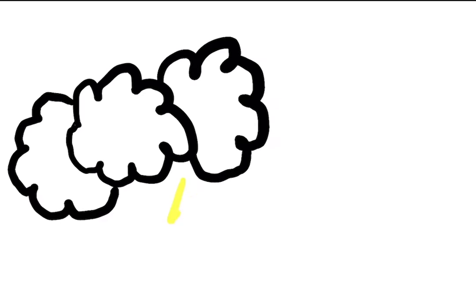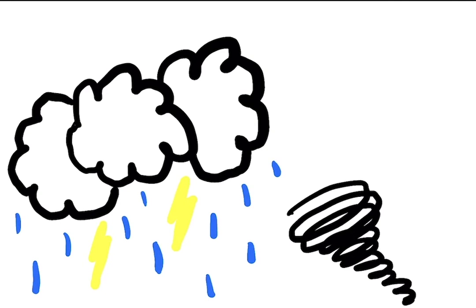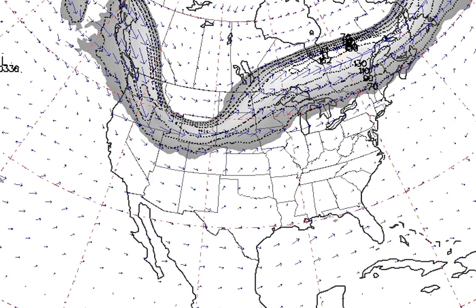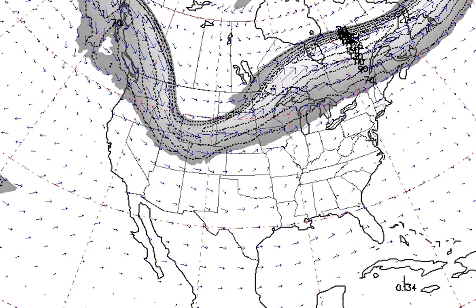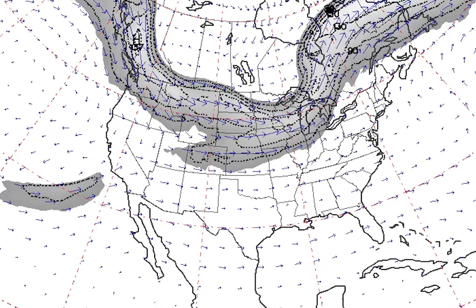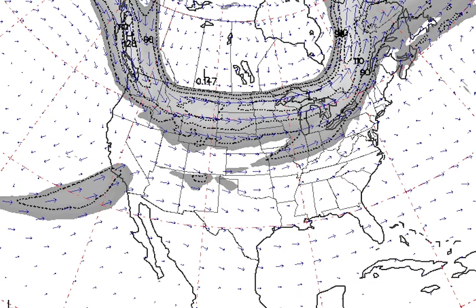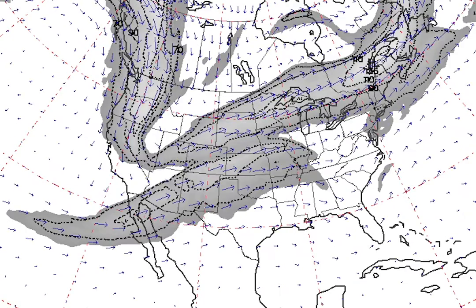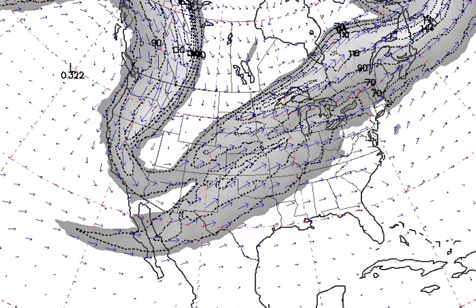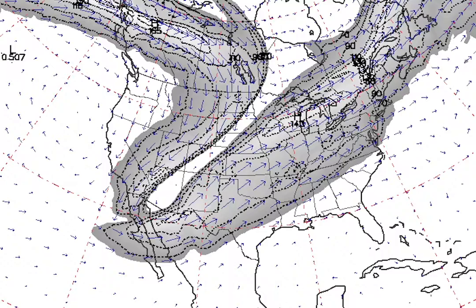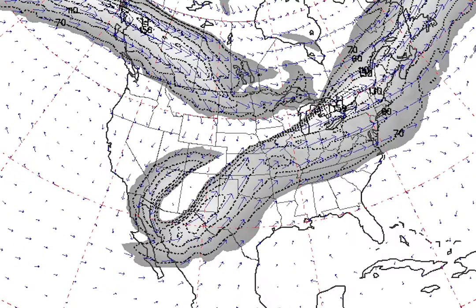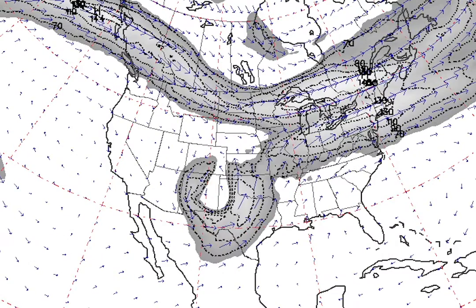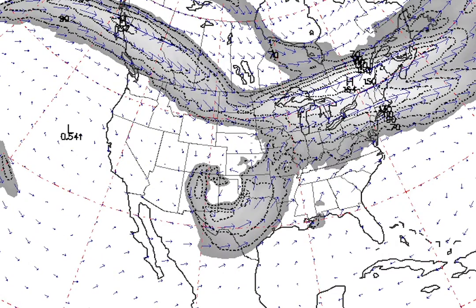Rossby waves are often associated with extreme weather events like hurricane storms and tornadoes. This is a collection of satellite images taken from this October. The polar jet stream and the subtropical jet stream actually got so wavy that they joined for a few days, delivering over a foot of snow to Texas and New Mexico in early October, far before the usual snow occurrences.